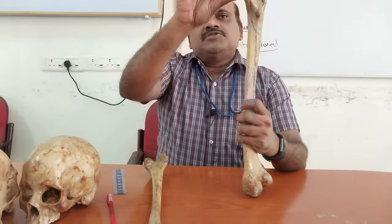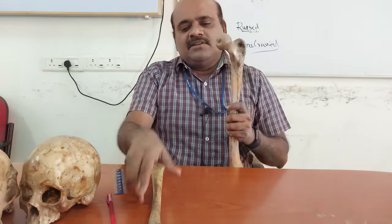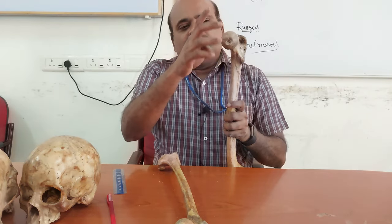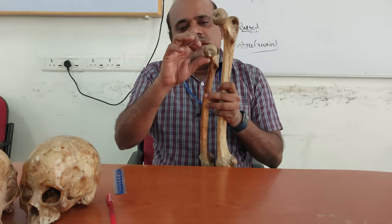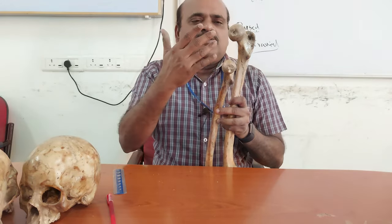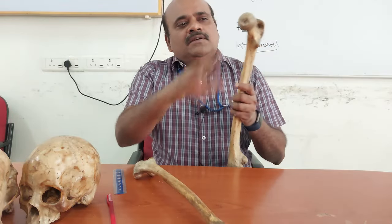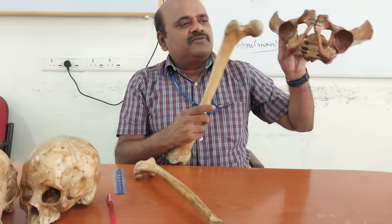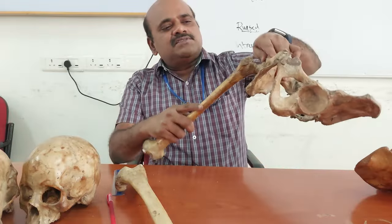Coming to the head of the femur: in the male the head is bigger, whereas in the female it is smaller. If you measure the vertical diameter, in the male it is more than 47 mm, whereas in the female it is less than 45 mm. The cut-off is 45.5 mm — above 45.5 mm is male, below 45.5 mm is female. The articulating surface of the head forms more than two-thirds of a sphere in the male, whereas in the female it forms less than two-thirds of a sphere.